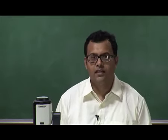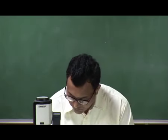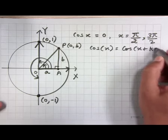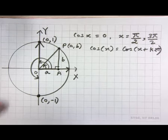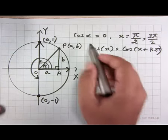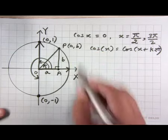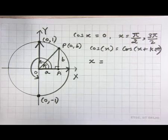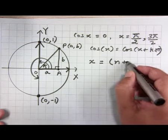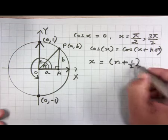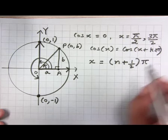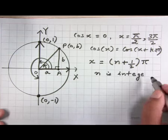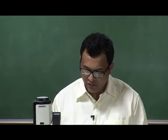Therefore, the solution to the equation cos(x) = 0 is when x = (n + ½)π, where n is an integer.